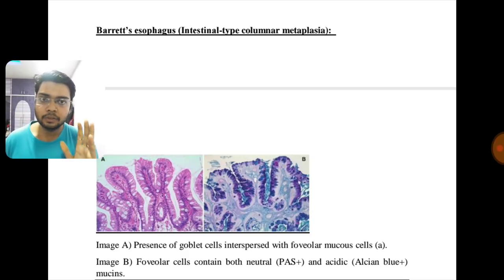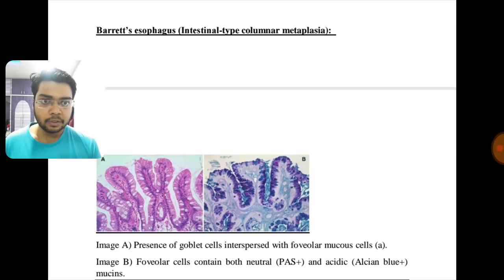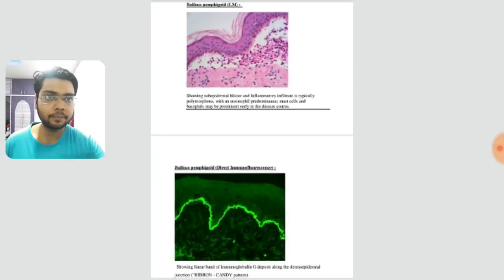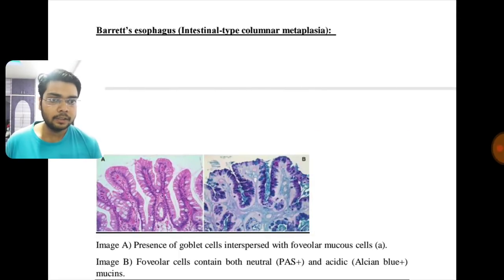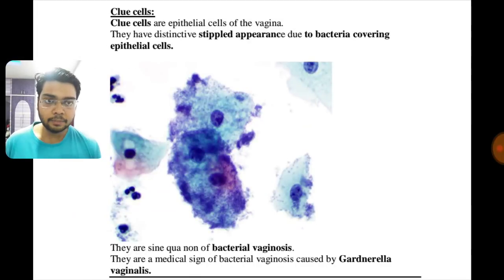This is Barrett's esophagus, something very frequently asked in NEET PG — they have already asked it by giving a picture. In image A you can see goblet cells interspersed between the mucous cells. The second picture shows that it is both PAS-positive and Alcian blue positive.